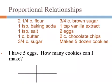Chemistry is exactly the same way. You're looking at a proportion between the chemicals and the chemical formula. So the question says if I have five eggs, how many cookies am I going to make?